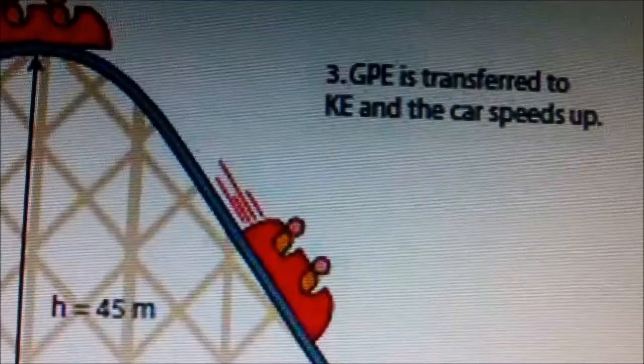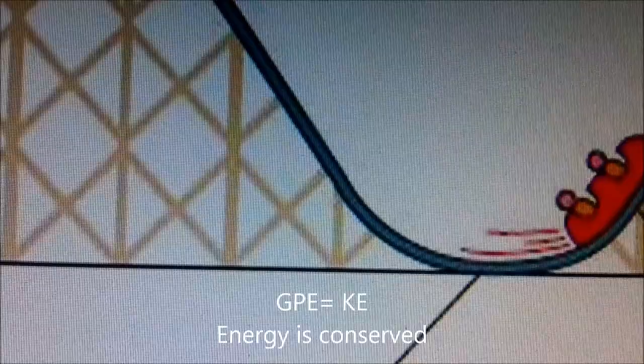As the roller coaster descends down the fastest slope, GPE energy is directly transferred to kinetic energy, and the car speeds up. As it moves down, its GPE energy decreases.